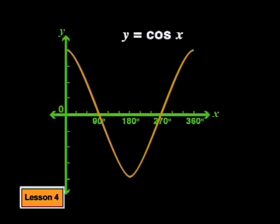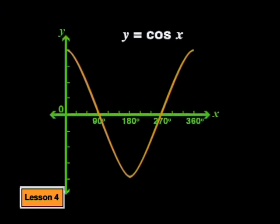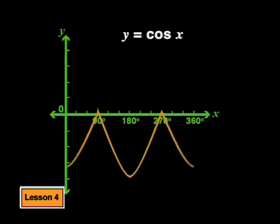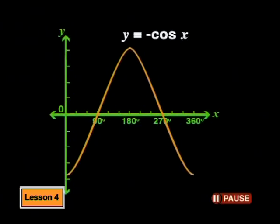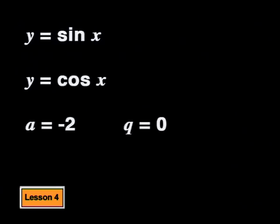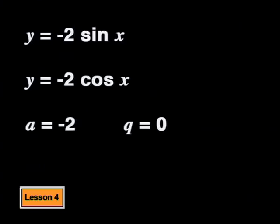The same thing happens to the cosine function. Reflecting the parent cosine graph about the x-axis forms the graph of y equals negative·cosine(x), because all positive y's become negative y's and all negative y's become positive y's. Now, how do you think the reflection will change if we use negative 2 or negative one half for our a value? Let's start with a equals negative 2. The formulas become y equals negative 2·sine(x) and y equals negative 2·cosine(x).